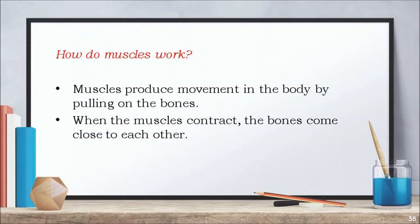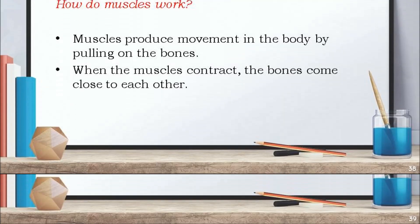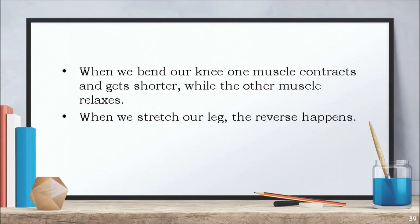Muscles produce movement in the body by pulling on the bones. When the muscles contract, the bones come close to each other. When we bend our knee, one muscle contracts and gets shorter while the other muscle relaxes. When we stretch our leg, the reverse happens.